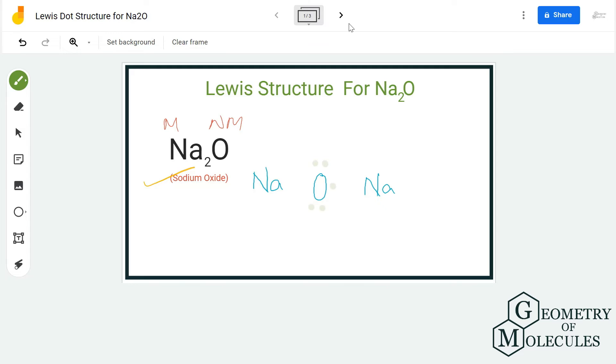Each sodium atom has one valence electron in its outer shell, and as there are two sodium atoms here, I'm going to place both on the sides of the oxygen atom and I'm also going to place one electron around it.